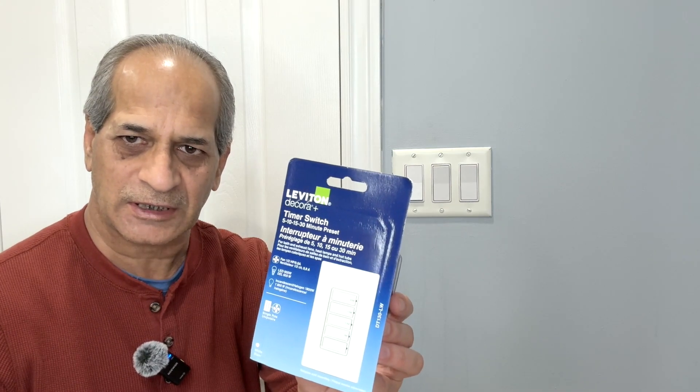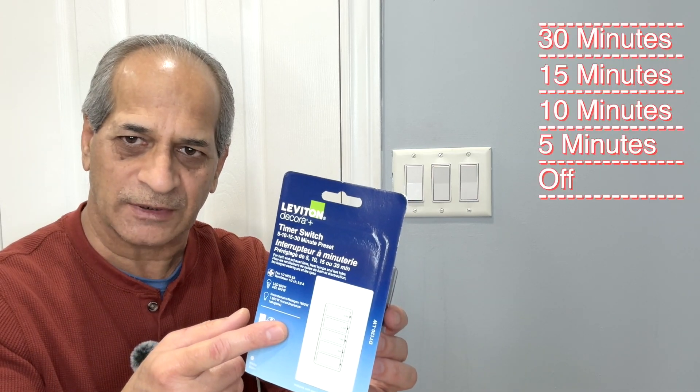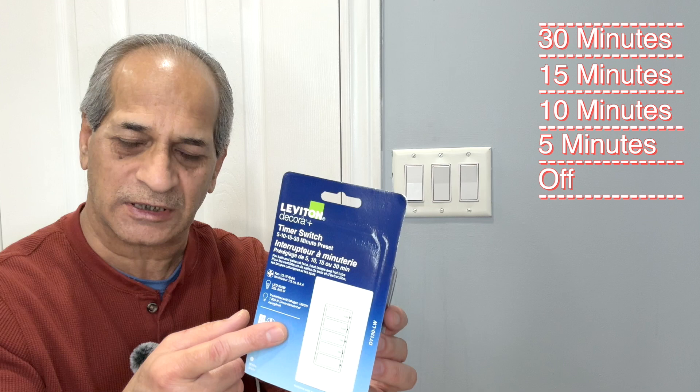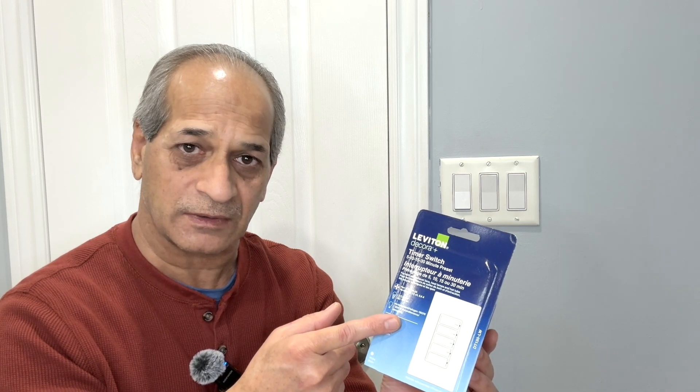For example, this switch is a 30 minute preset timer and you can select, you can leave the fan on for 5 minutes, 10 minutes, 15 minutes or 30 minutes at the most. These switches come in different preset time durations. You can have one for 60 minutes, 2 hours or even up to 12 hours. The choice is yours and I also selected this switch because it does not require a neutral wire.